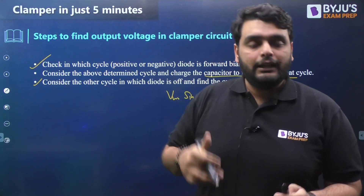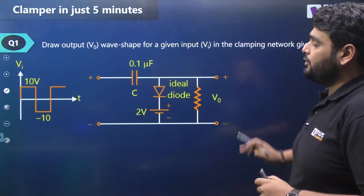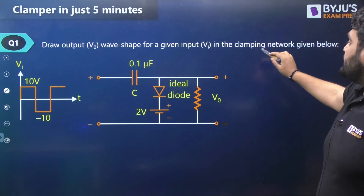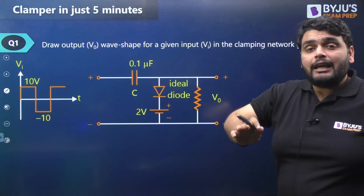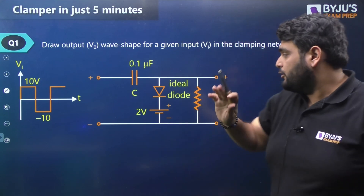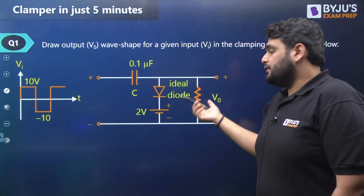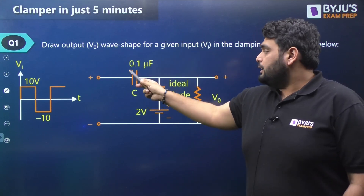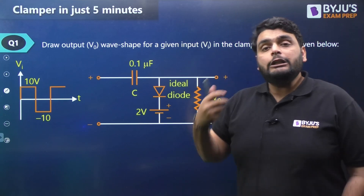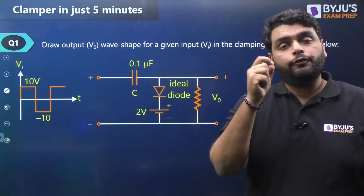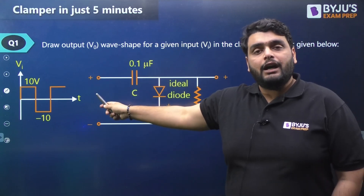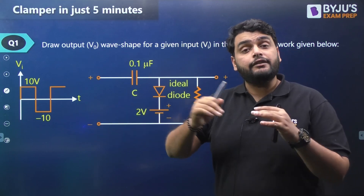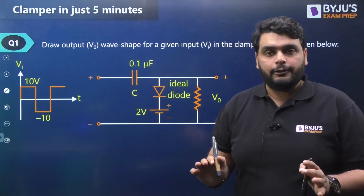Let's apply this to a question: draw the output waveform for a given clamping network. First, if the resistor value is not given, take it as very high so the time constant will be very high. If the resistor value is given, find RC and check whether it is higher than the time period; if not, the circuit is not a clamping circuit.